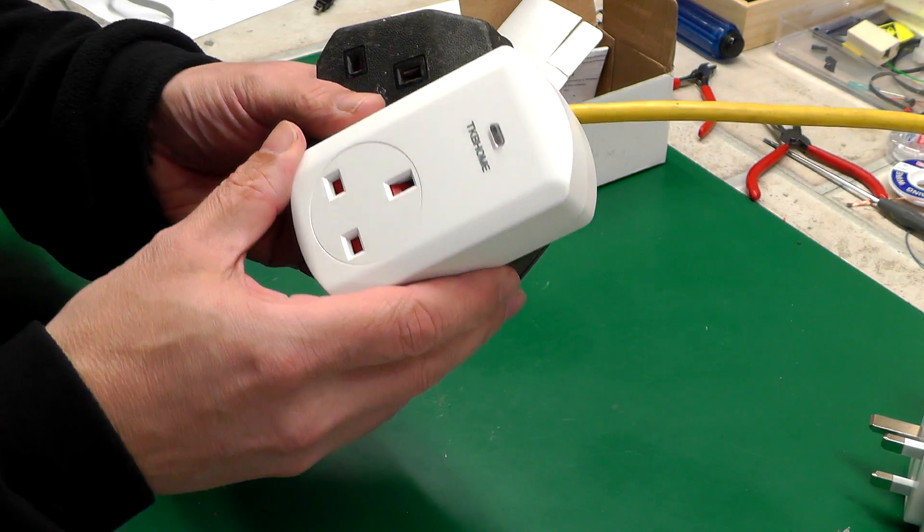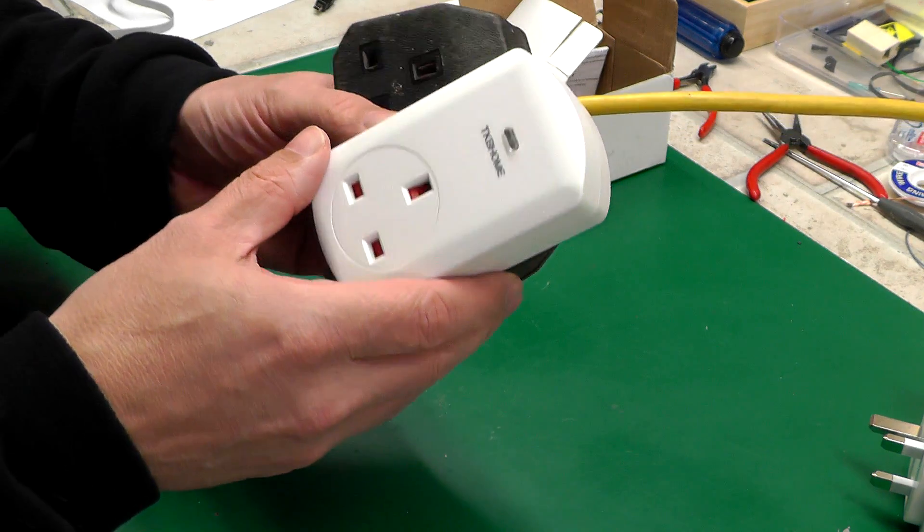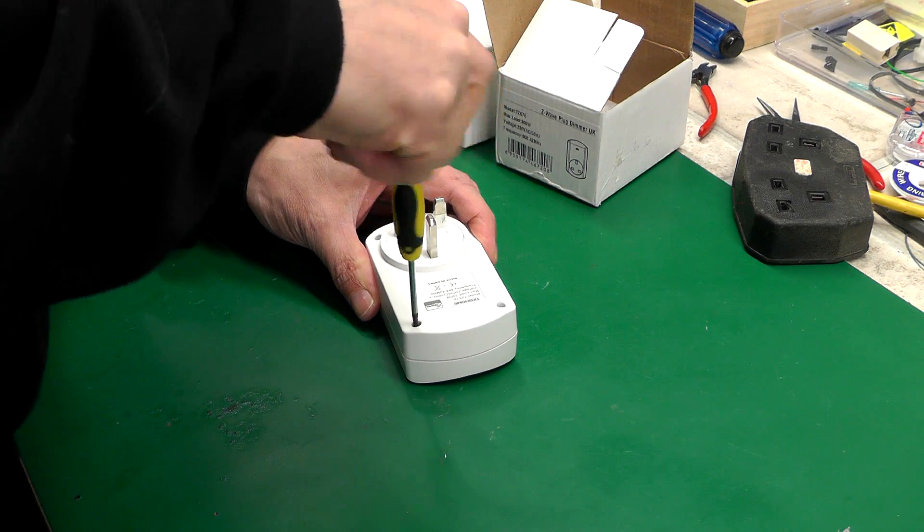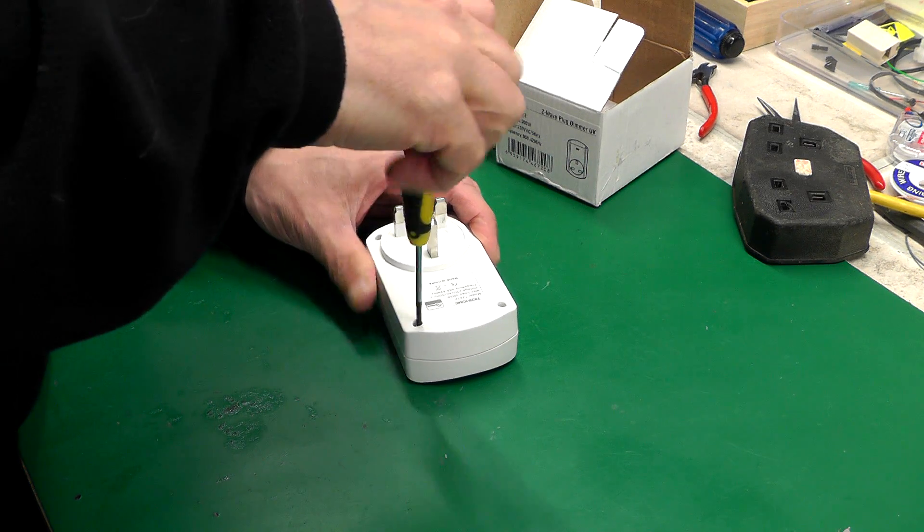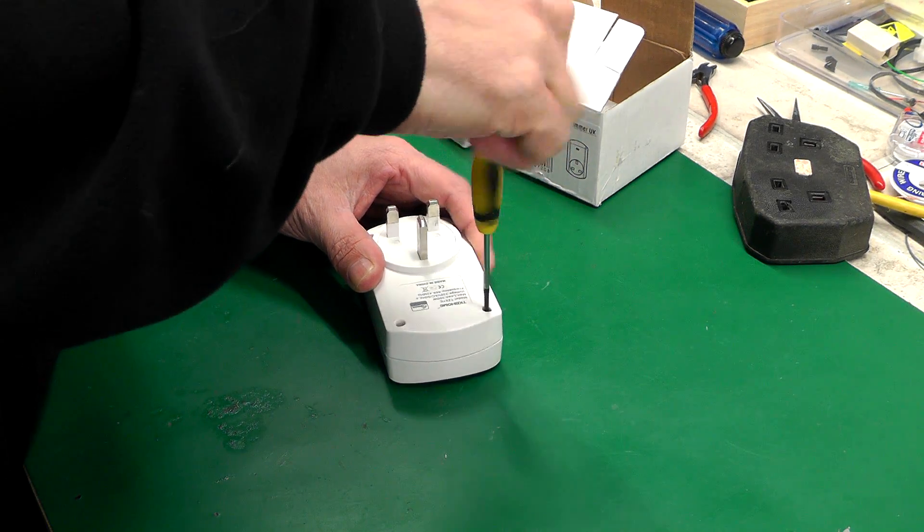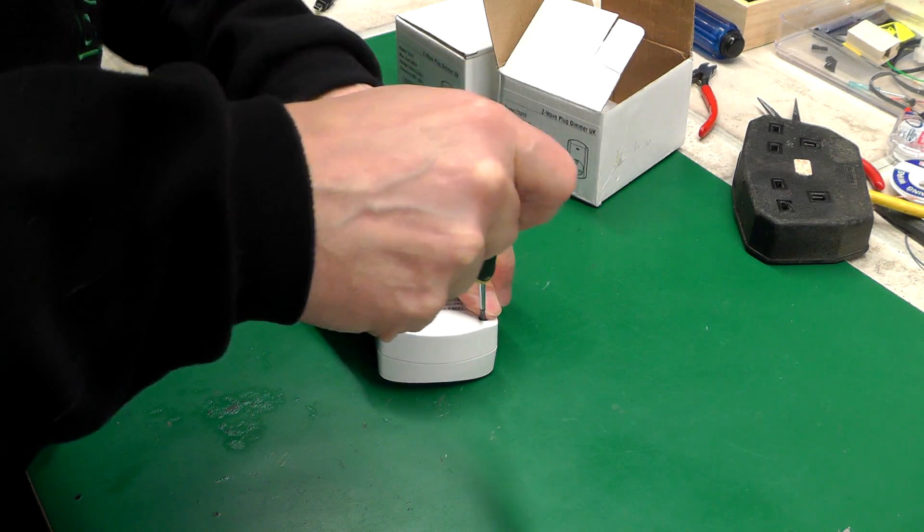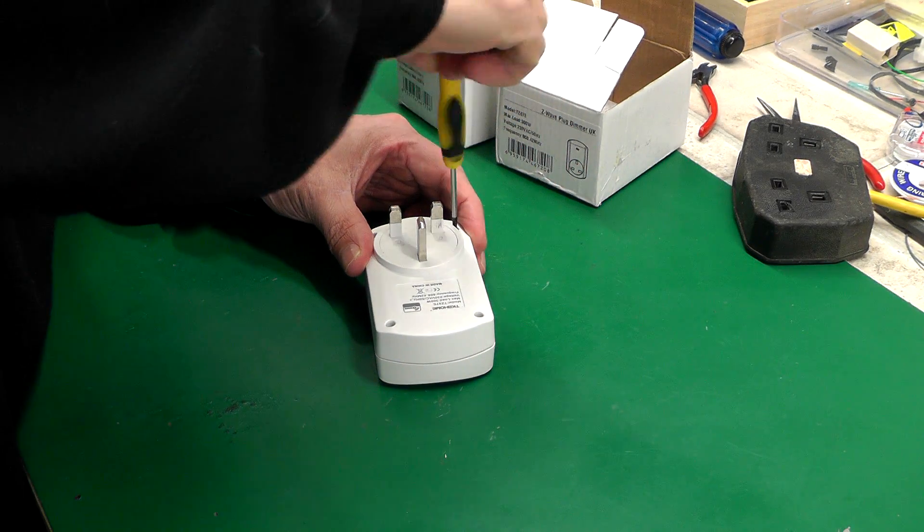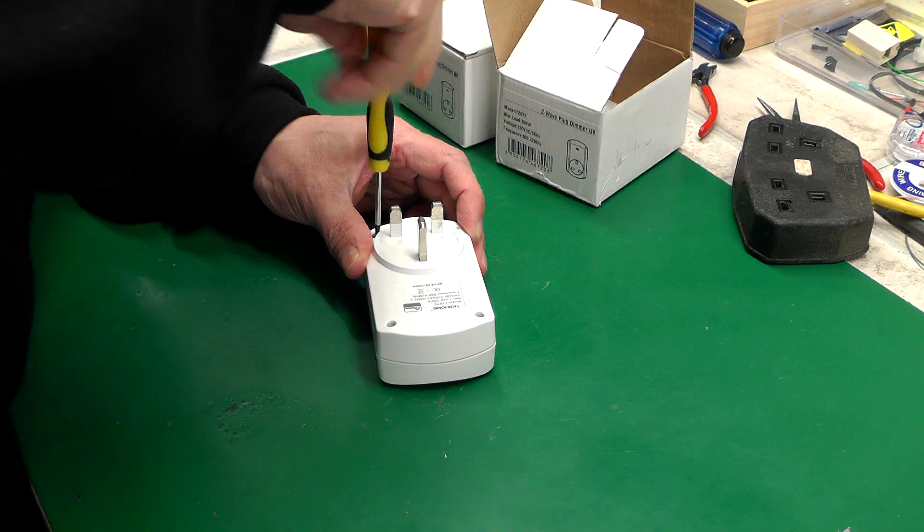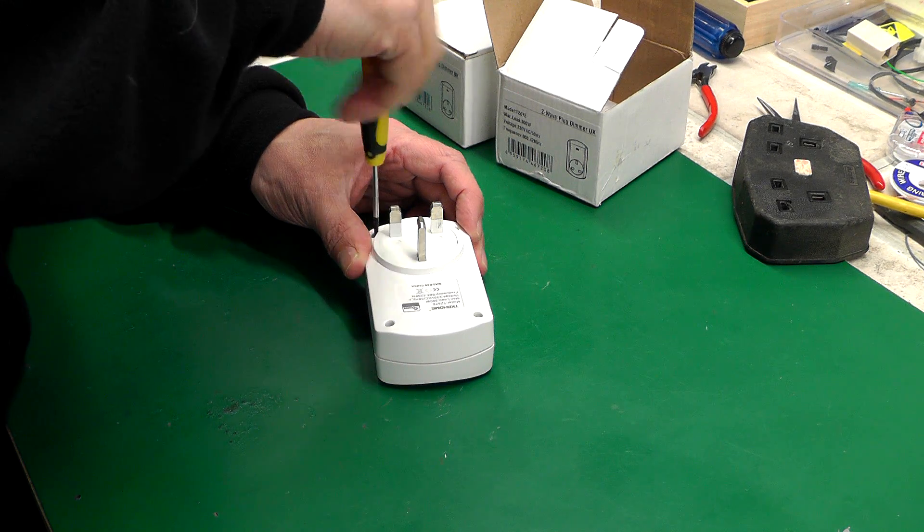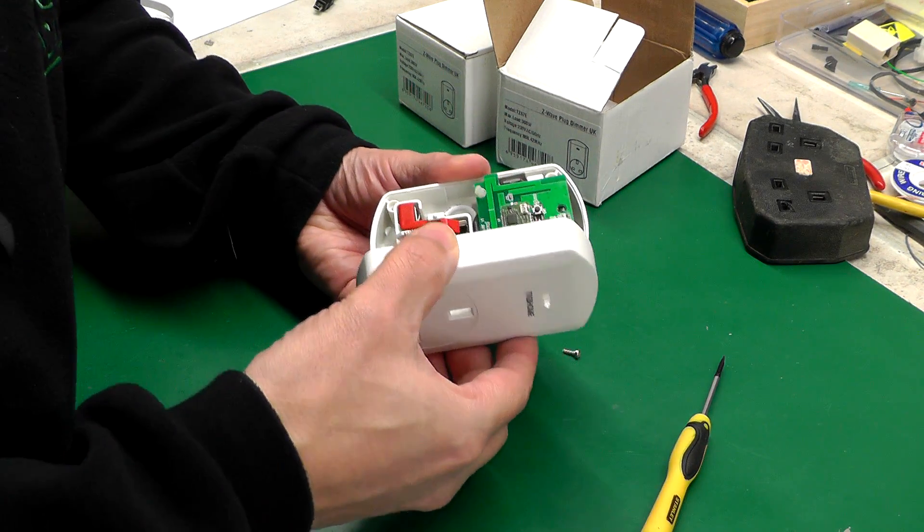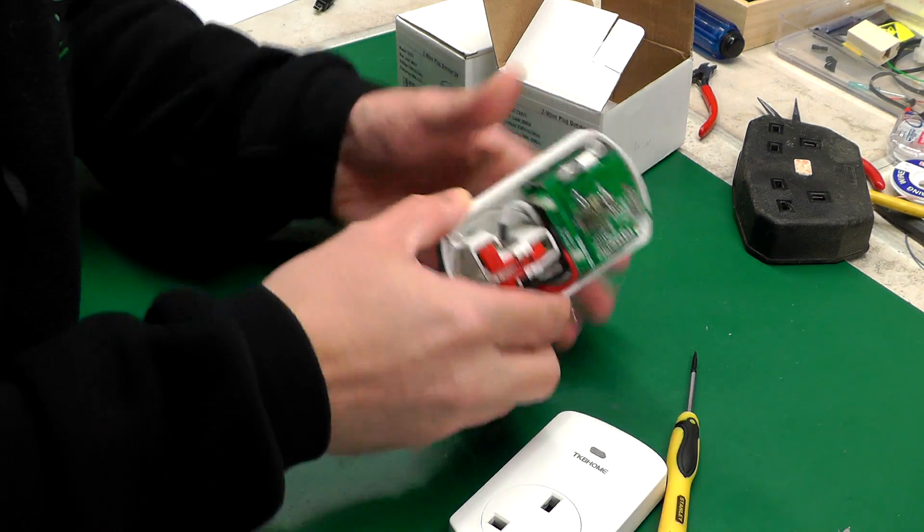First thing I'll do is open one up and let's have a look inside. Hopefully it's going to be something simple. I don't believe these will be fused. If they are, there's probably some surface mount fuse or some sort of inline protection that's gone open circuit, but we'll have a look. I'm not sure if somebody's been in here before, the screws there weren't exactly tight.